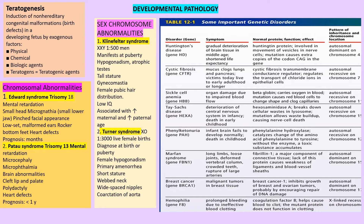Now we can see developmental pathology, starting with teratogens — agents including physical agents, maternal infection, hormones, and drugs that can affect the mother during pregnancy and cause congenital malformation or birth defects in the baby. The maternal infection TORCH complex is important, as it can transfer from the placenta to the baby during pregnancy. TORCH stands for: Toxoplasma, Other agents such as syphilis and HIV, Rubella, CMV, and HSV.